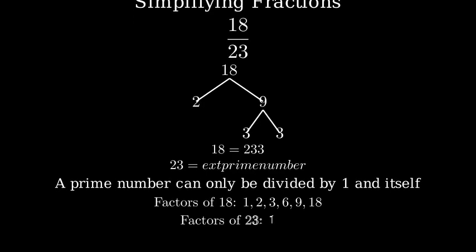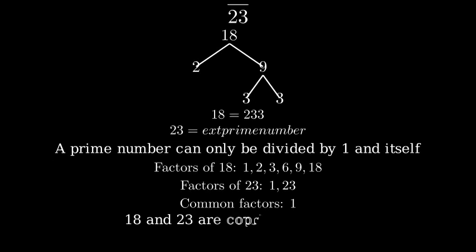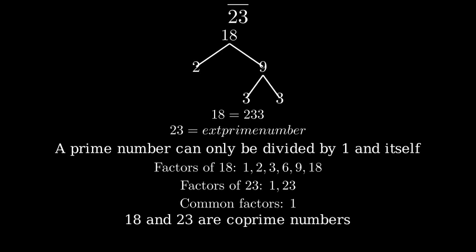Since 23 is prime, its only factors are 1 and 23. Looking at these factors, we can see that the only common factor between 18 and 23 is 1. Since the greatest common factor is 1, this means that 18 and 23 are coprime numbers.